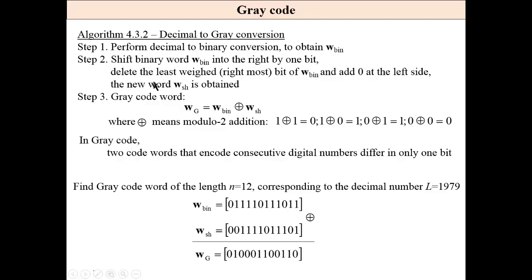We add zero at the left and delete the last bit from the right. Then we add modulo 2 to the binary word and the shifted word. This will obtain the code word in grey code.